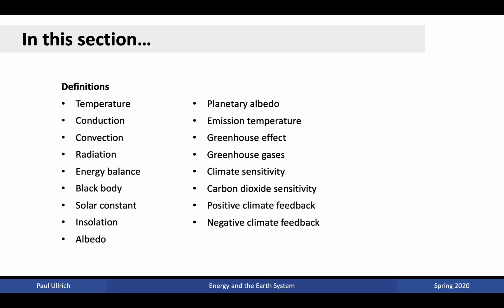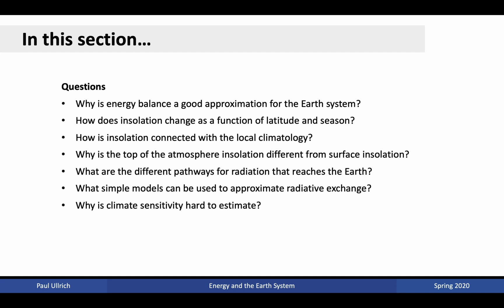The questions we're aiming to answer in this section are: why is energy balance a good approximation for the Earth's system? How does insolation change as a function of latitude and season? How is insolation connected with local climatology? Why is the top of the atmosphere insolation different from surface insolation? What are the different pathways for radiation that reaches the Earth, and what simple models can be used to approximate radiative exchange? Finally, why is climate sensitivity hard to estimate?